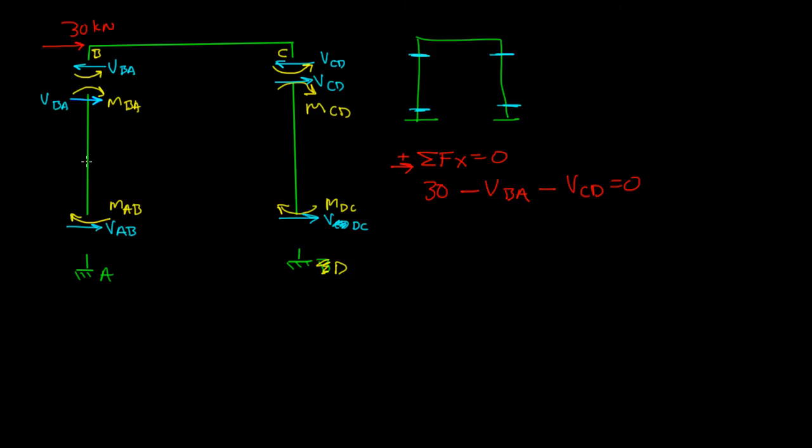We need to look at these members separately. So, if we were to look at member AB, and I said the sum of the moments at, let's see, point A is equal to 0. And point A, I'm going to look right here, and I'm going to say clockwise is positive. I'm going to get MAB plus MBA plus VBA times 12 is equal to 0.